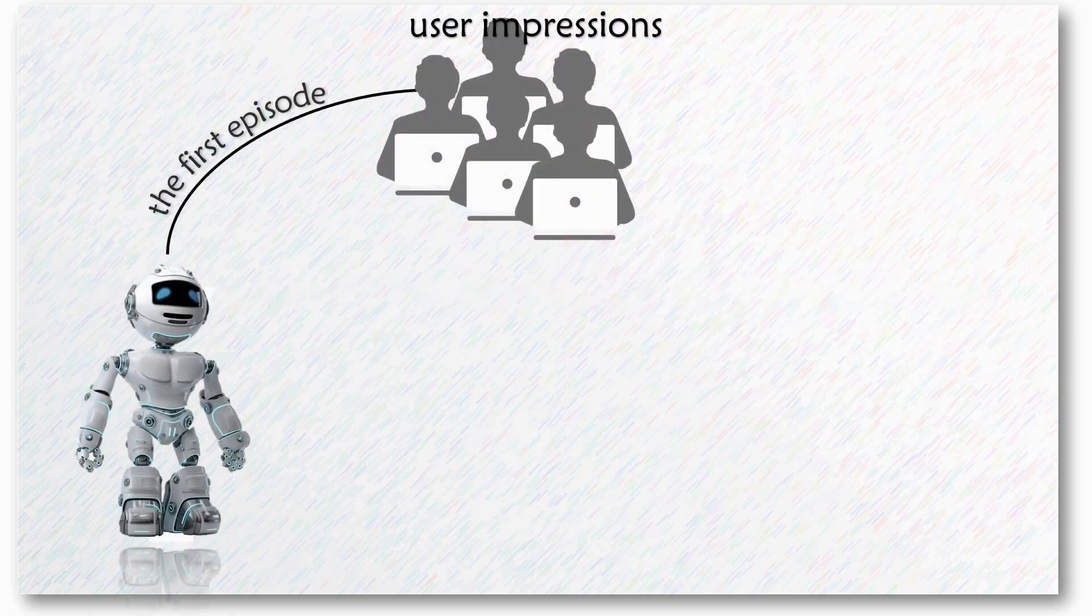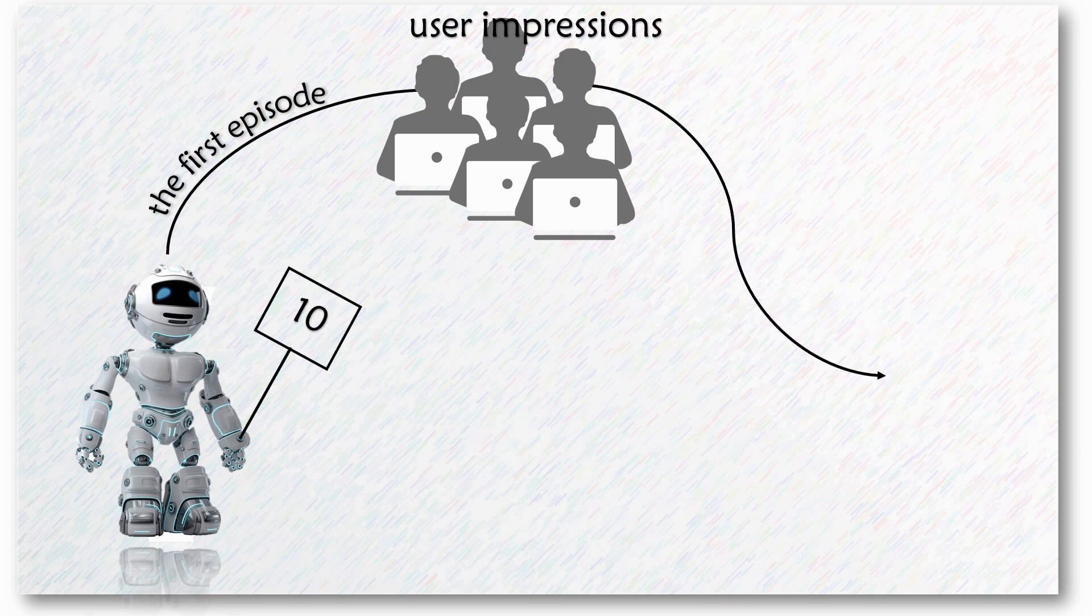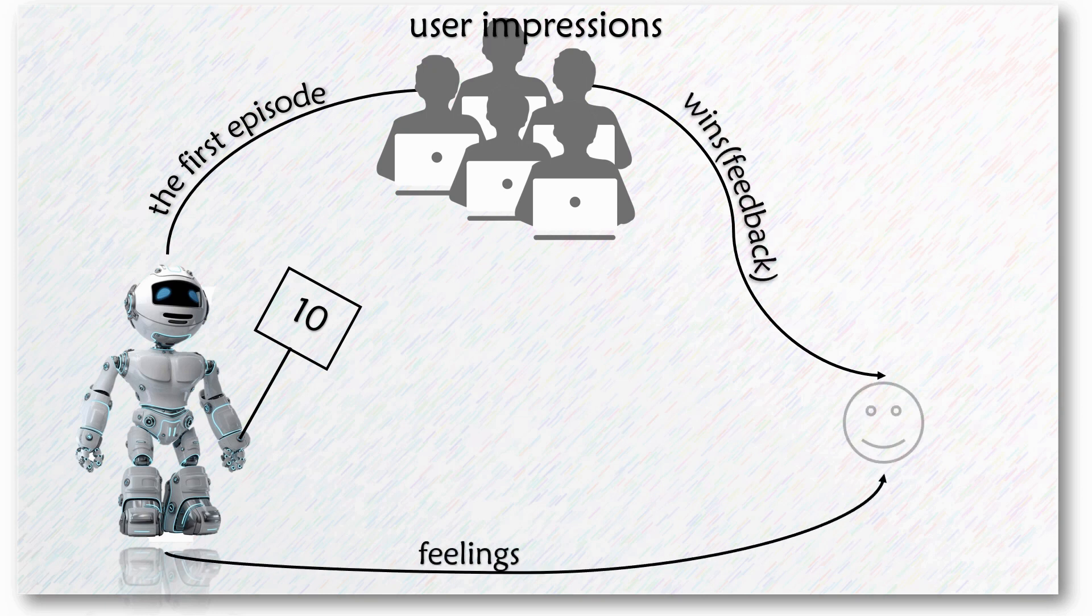In the first online auction episode, the RL machine boy helps the advertiser make a bid decision. And finally, he wins. So the RL machine boy is happy with the feedback.